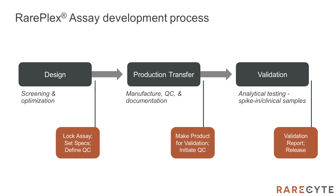We then transfer the assay and QC procedures to manufacturing, who then make the staining kit lot that will be used for the subsequent validation studies. Validation comprises a regimented set of studies that measure performance of the locked assay, with an emphasis on accuracy and precision, using a mixture of spike-in surrogate samples and clinical samples. In the next few slides, I will show some example data from design and validation phases to give you an idea of the types of studies we perform and the data our system generates.